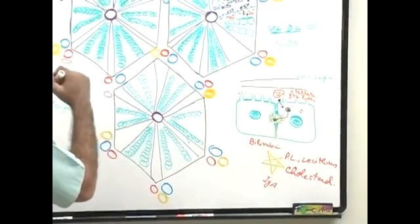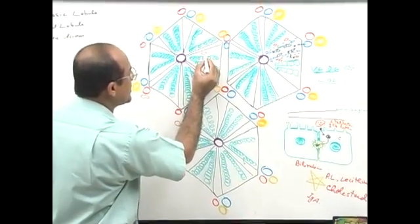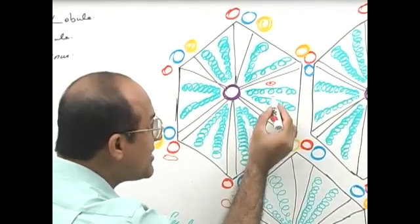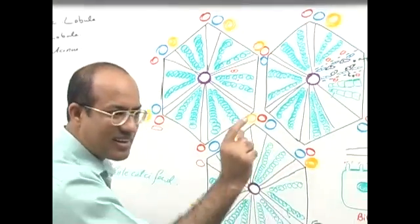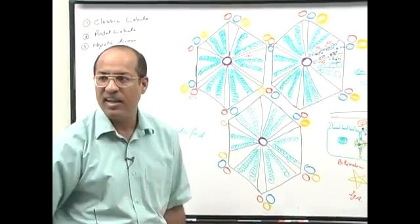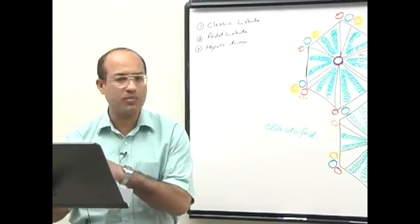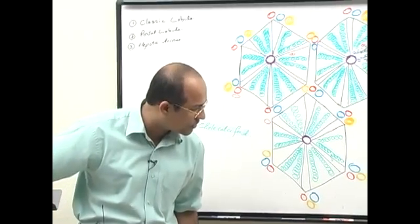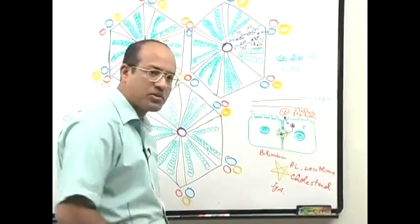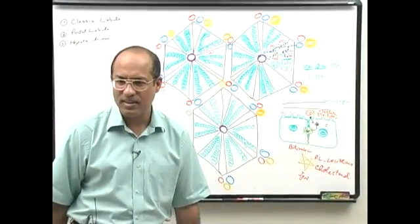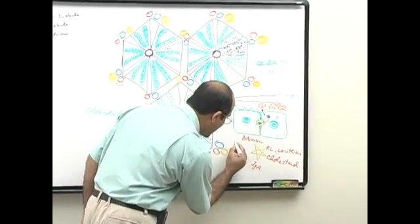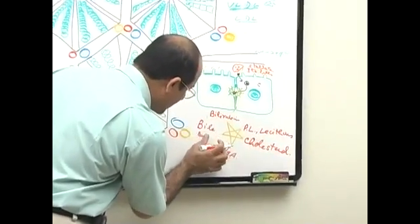IgA antibodies are also a component of bile. Plasma cells in the space of Disse produce IgA, which is taken up by hepatocytes and pumped into the bile drainage system. Through bile, a lot of IgA enters the GI tract and protects it against viruses, bacteria, and other invading organisms. Bile salts or bile acids are also a very important component of bile.